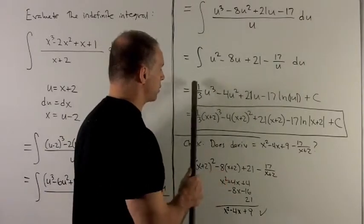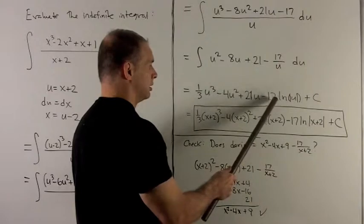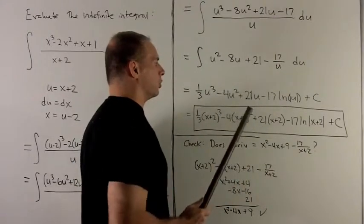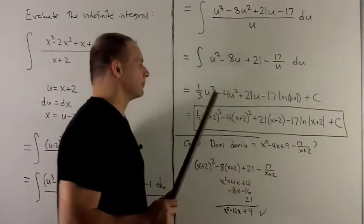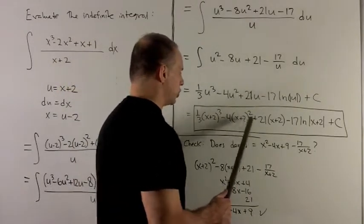So, that gives me these first three. Then here, that's just 17 times natural log of absolute value of u, plus a constant. I put my x plus 2 back in for u, and I get my answer here.